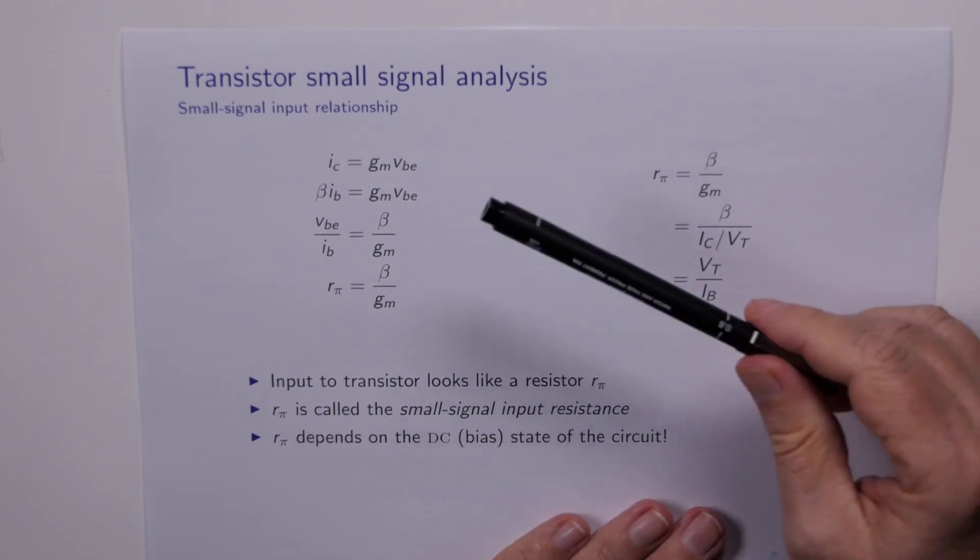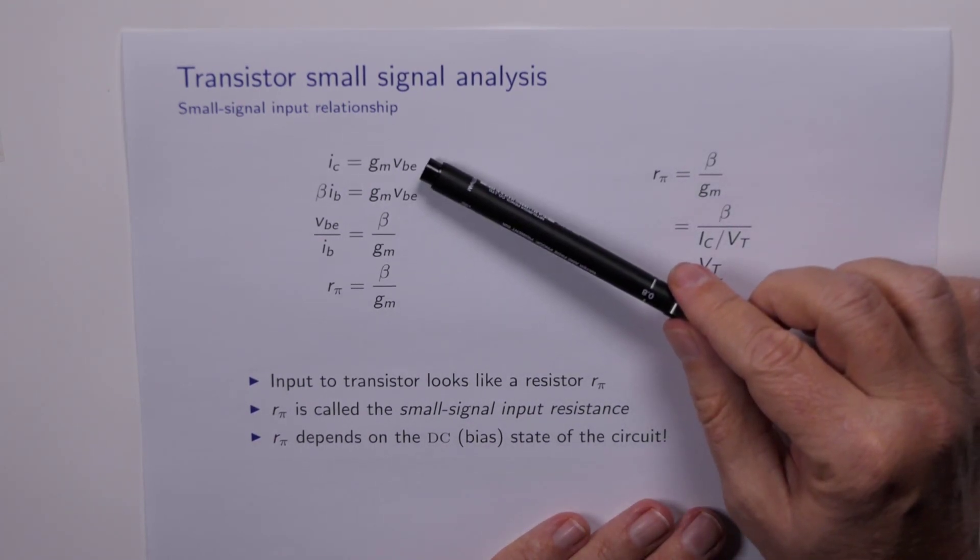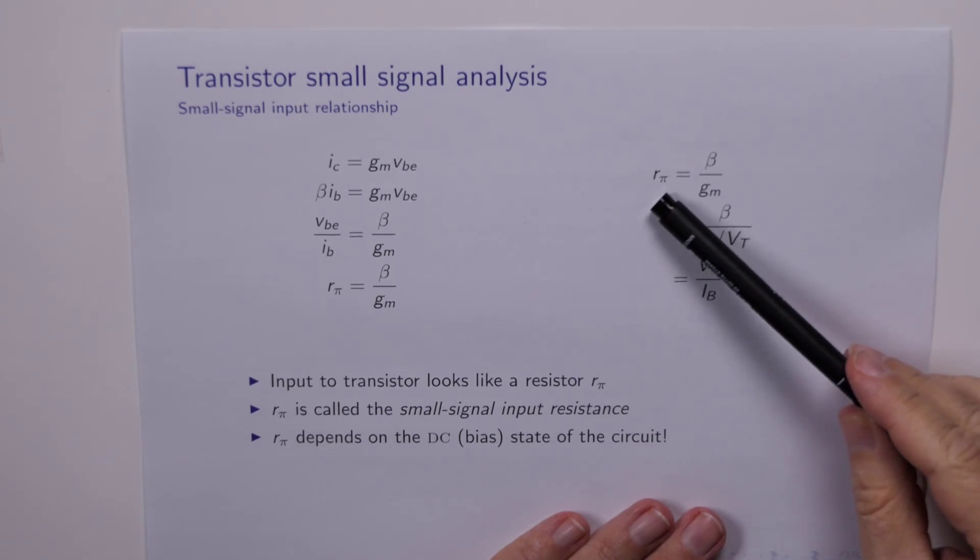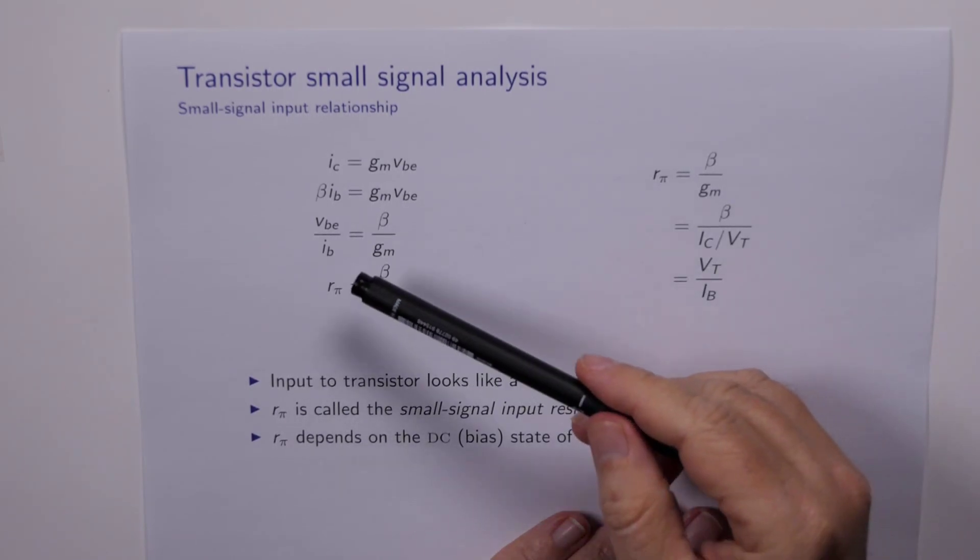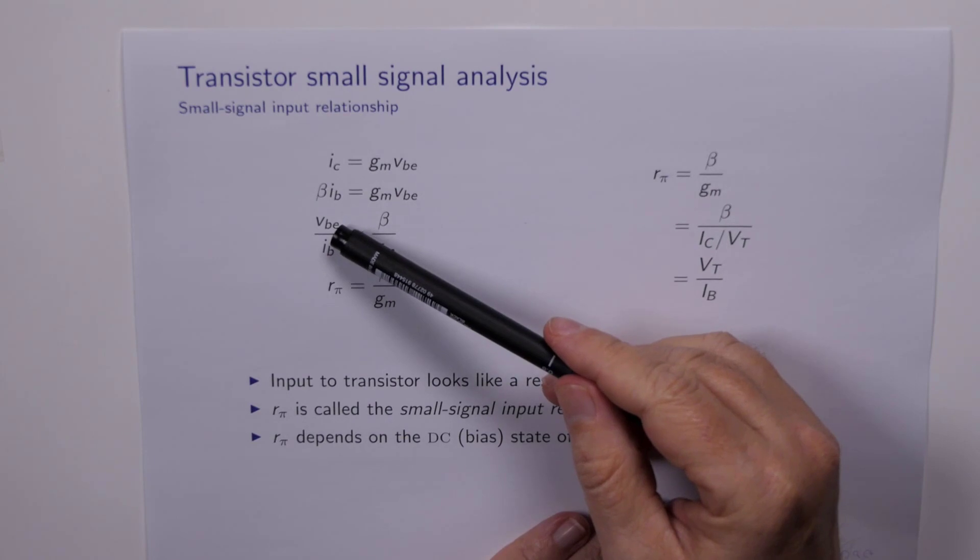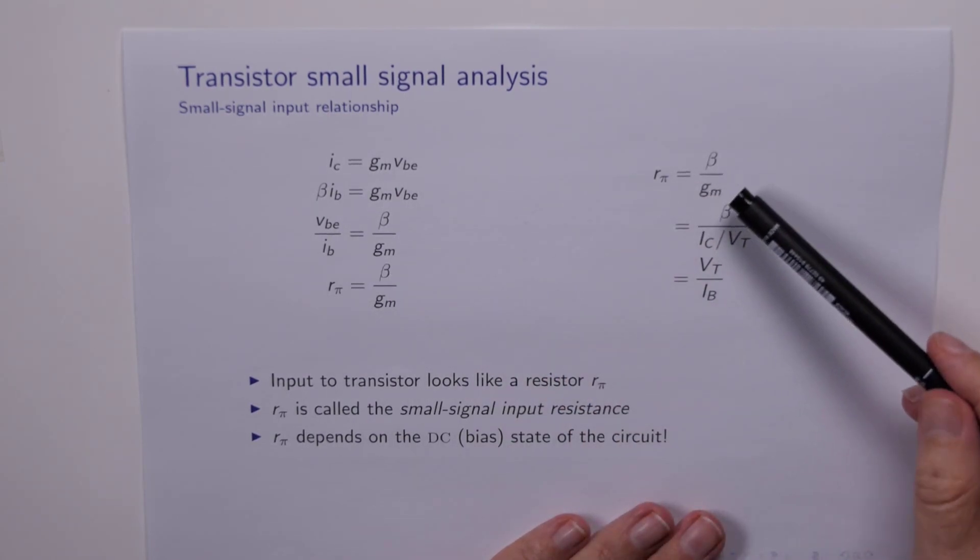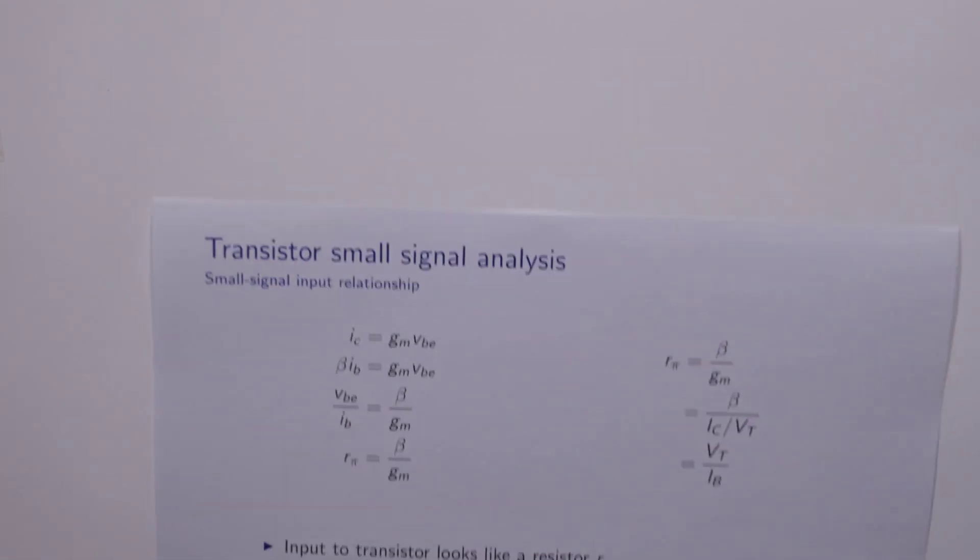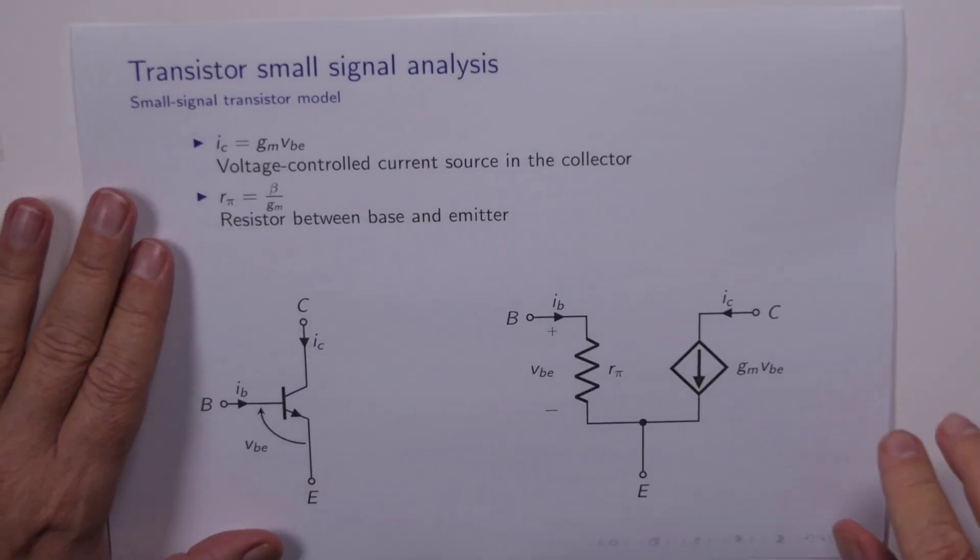Now taking these equations, the collector current being equal to the transconductance times the base emitter voltage, and the R pi being the resistance between the base and the emitter terminals, this suggests a way forward for coming up with a model for the transistor. So let's just take those equations and see if we can't nut out an equivalent circuit.